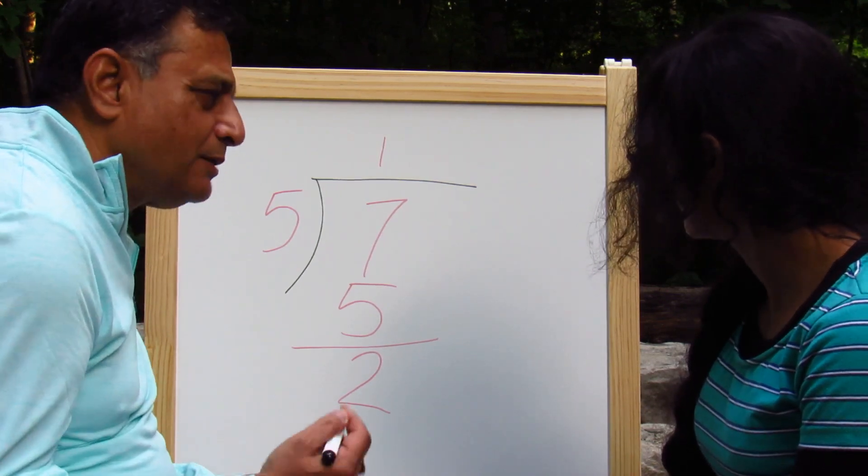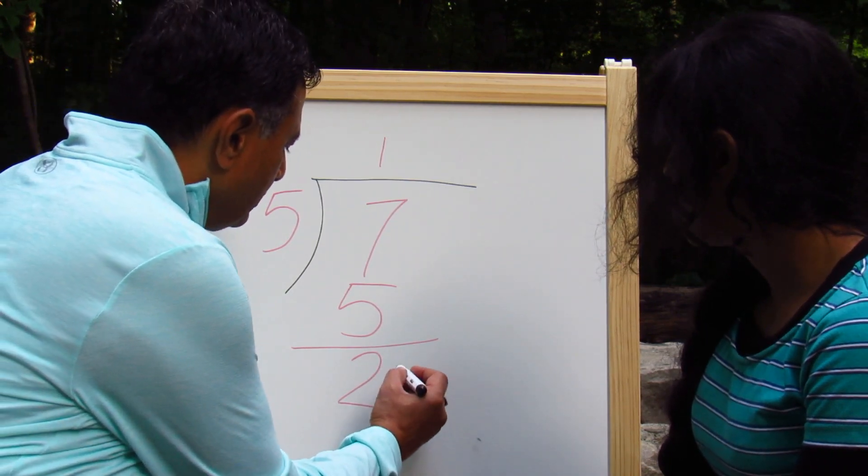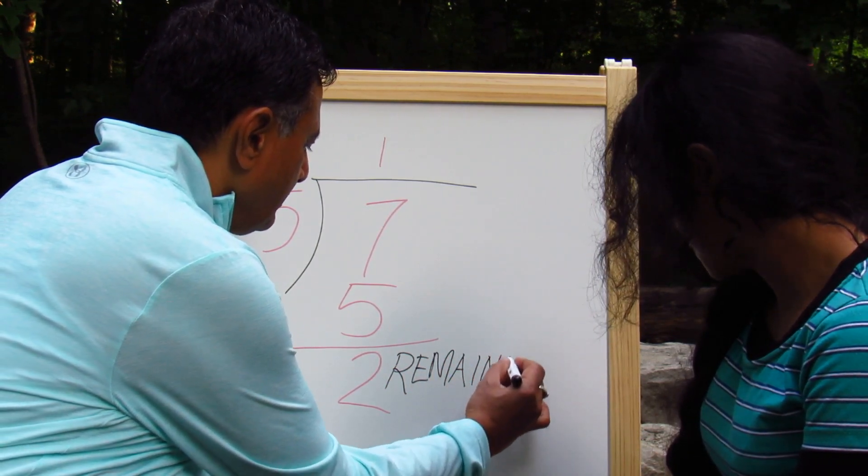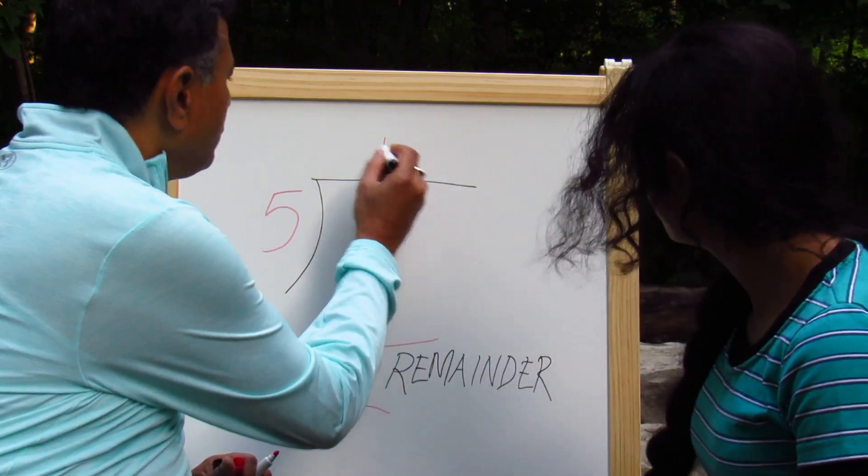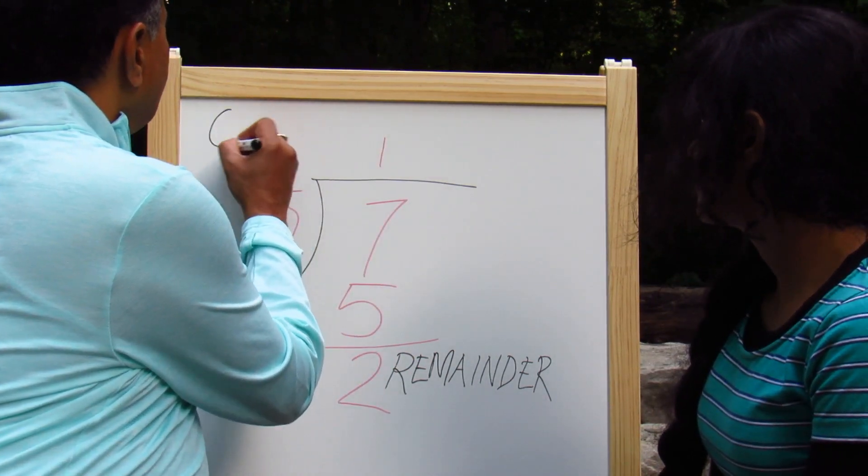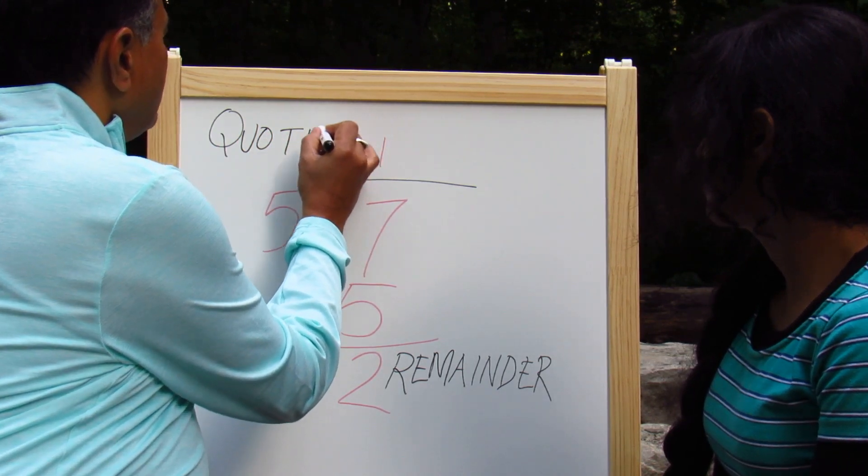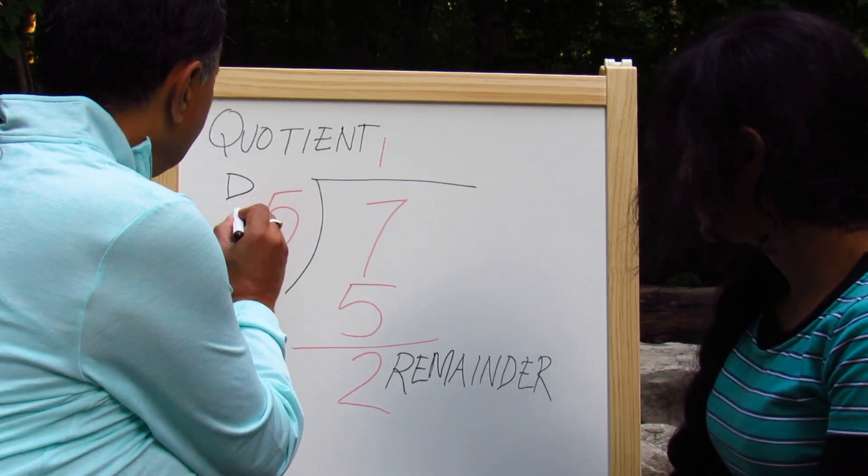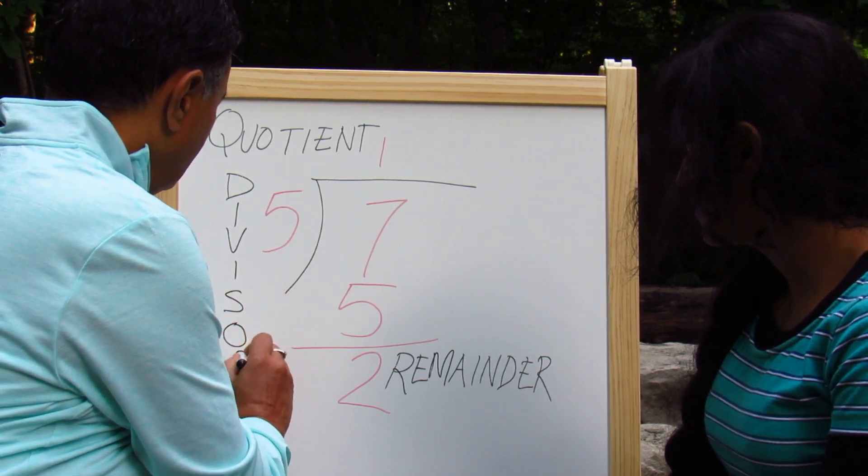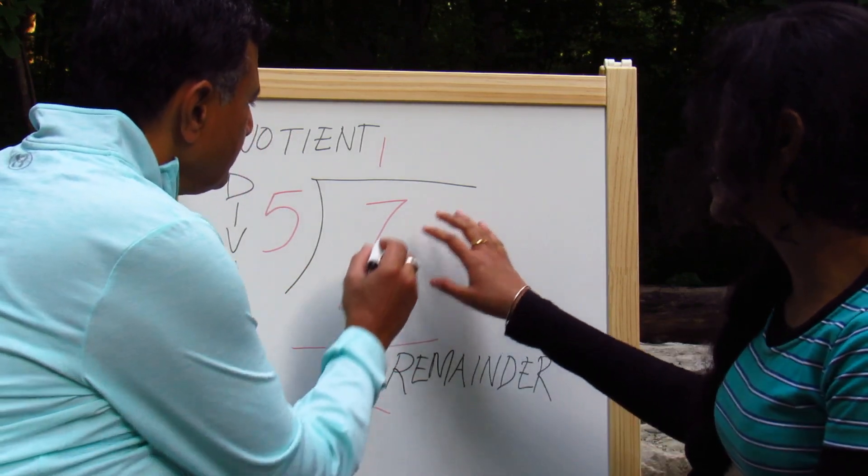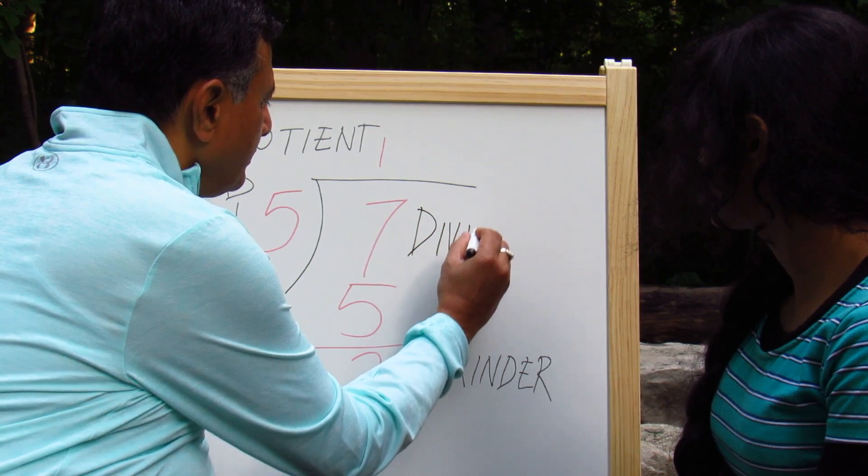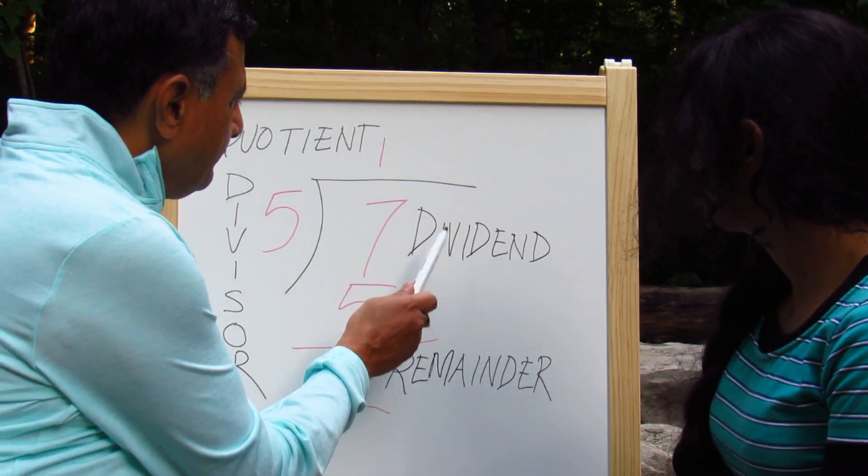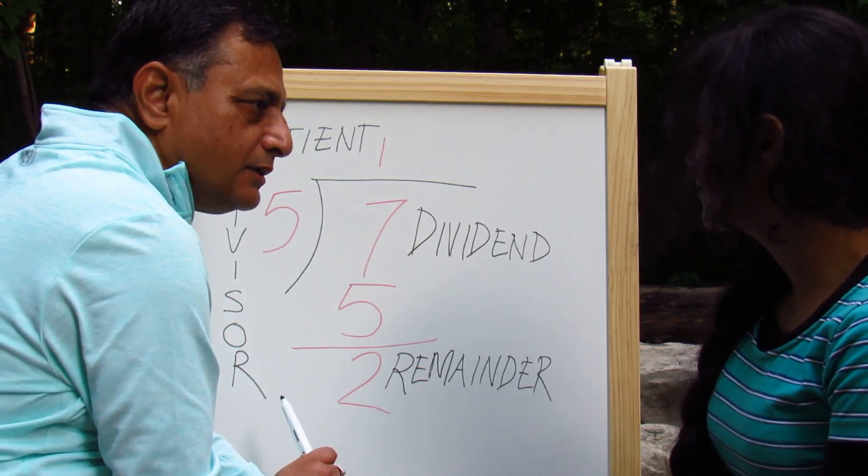Let us define some terms here. It becomes easier to communicate. So as you know, this is called remainder. What is this called? That number 1 on top? It would be a quotient. And how about this 5? This would be your divisor. And how about this number 7? The one that's being divided is the dividend. So basically, when you divide, you divide the dividend by the divisor, you get the quotient and the remainder.